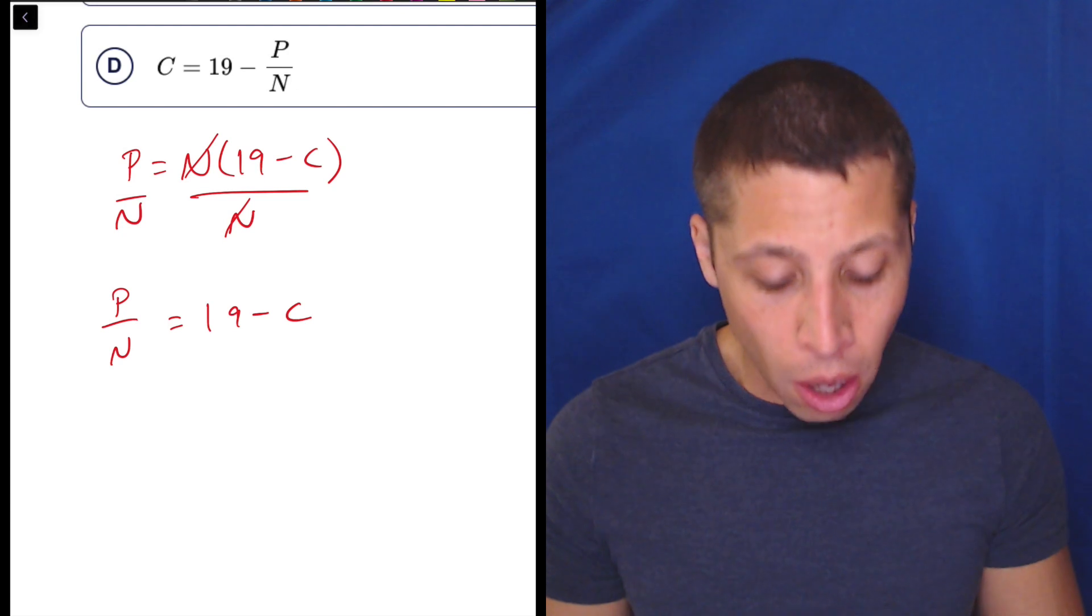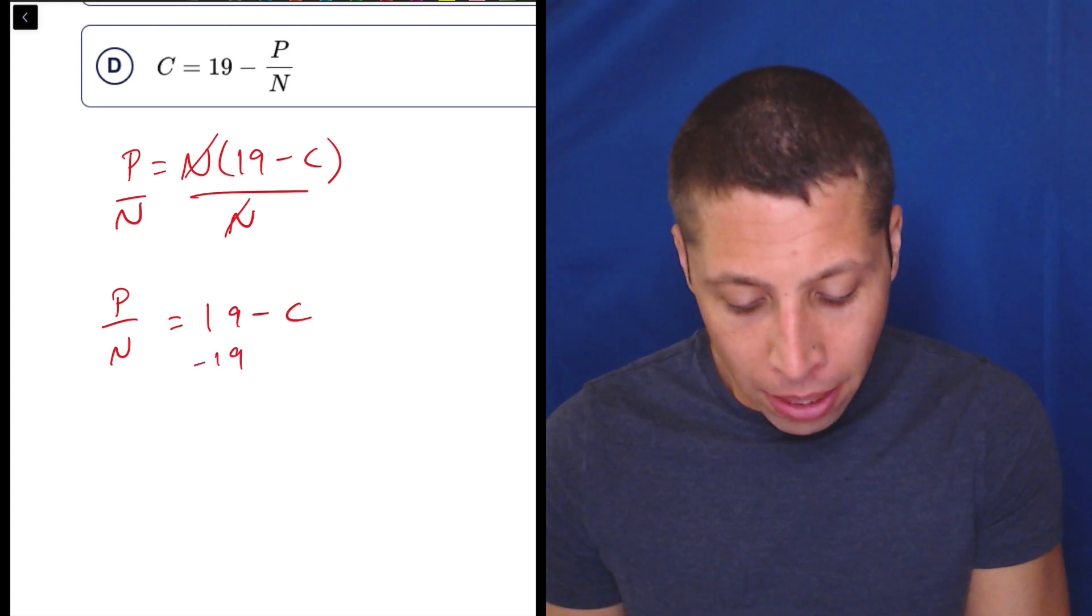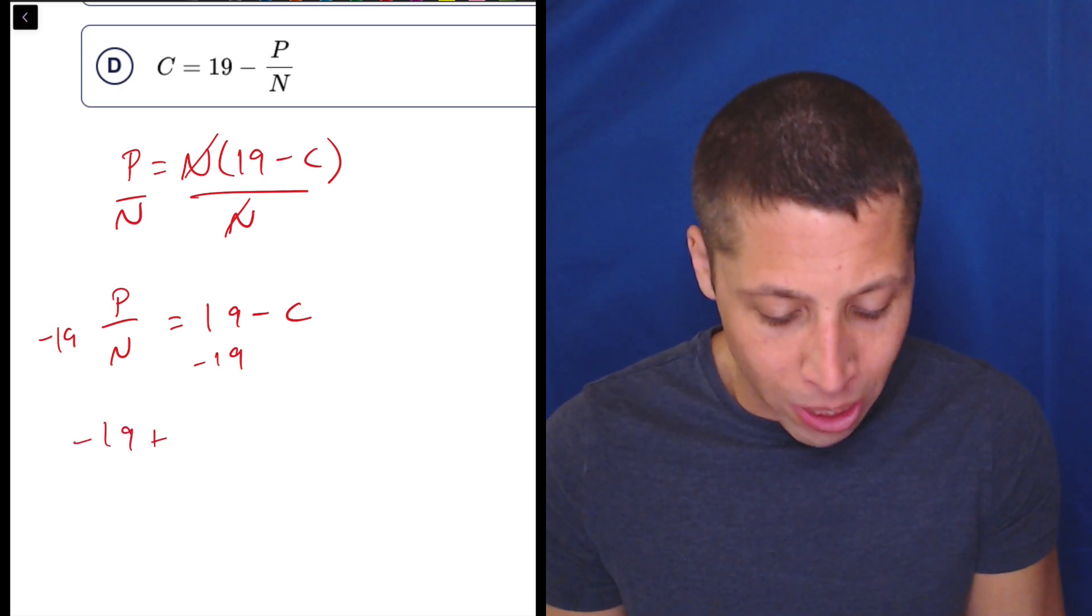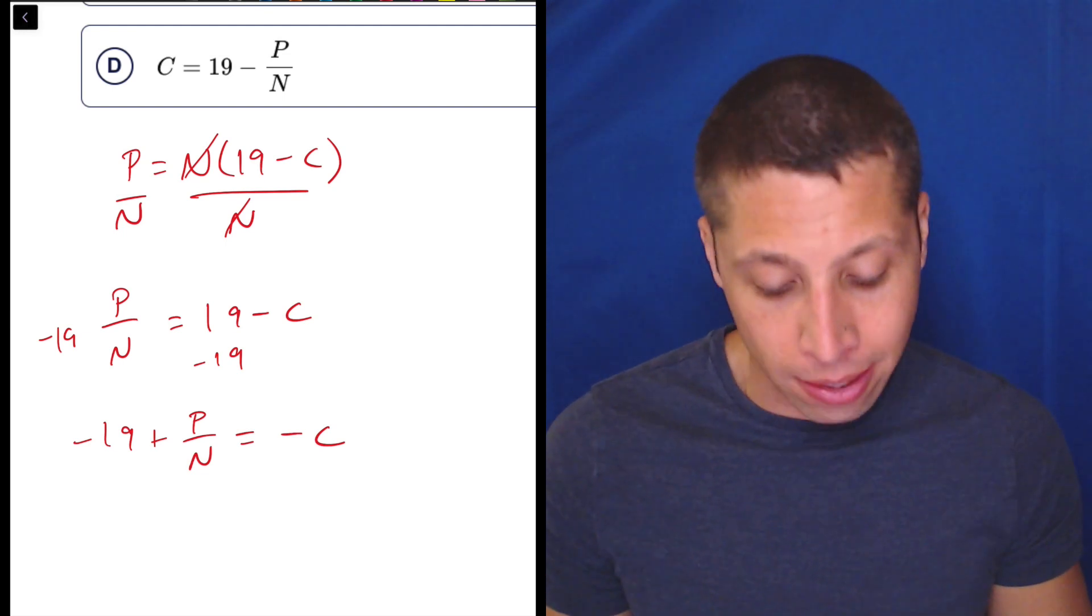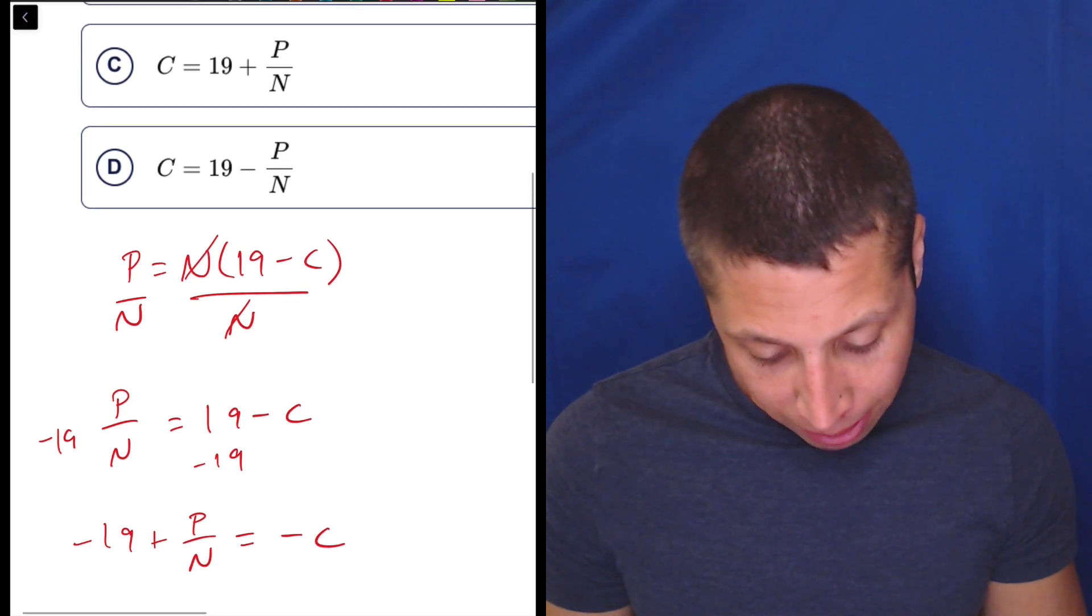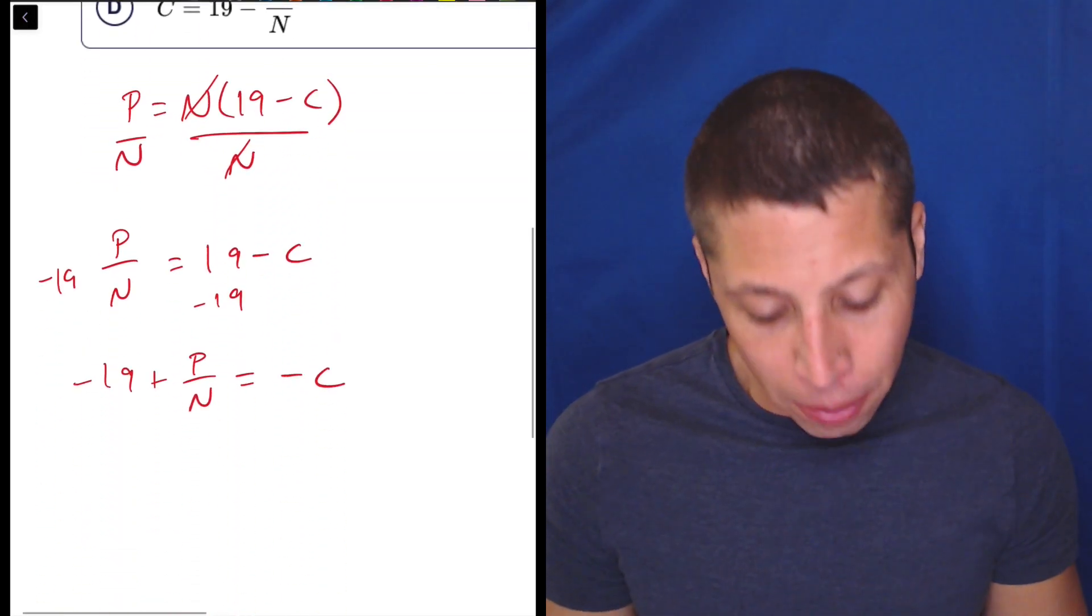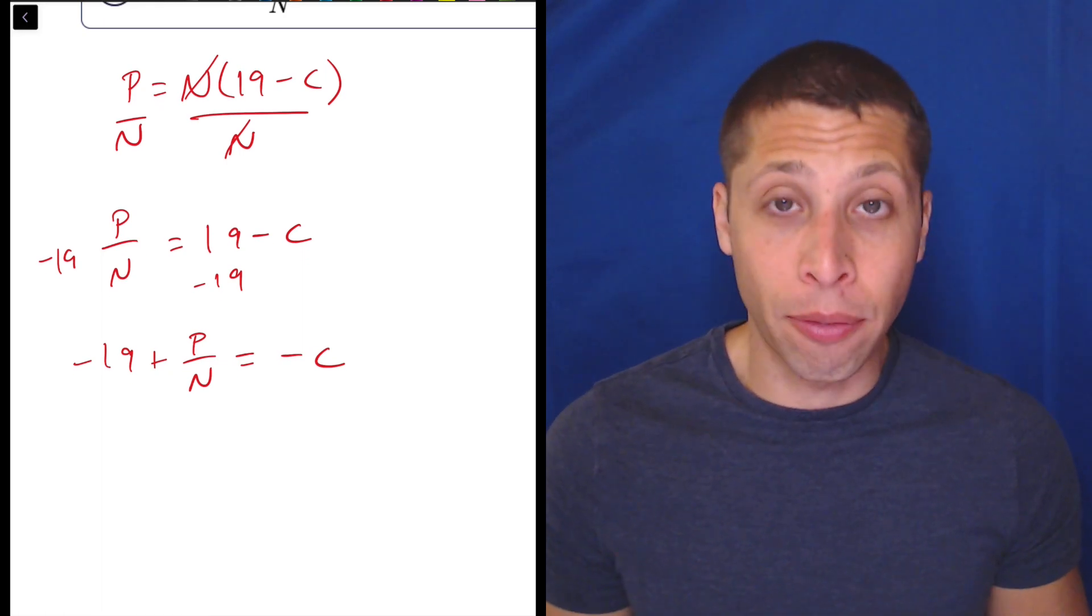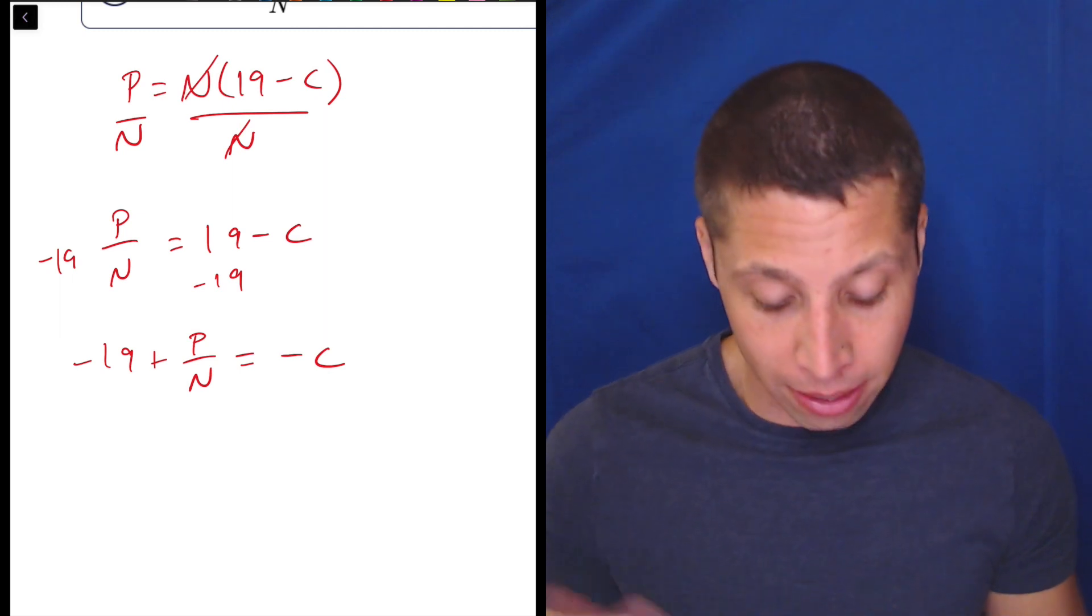Then if we want to get C alone, our habit should be, okay, let's minus 19. And we can do that, but I'll put it over here. You can see that what ends up happening is we end up with kind of this messy negative C on the right side. So this might set us up for kind of a mistake. I would worry about there being a mistake if we kind of forgot that C is technically still not alone. It needs to be negated.